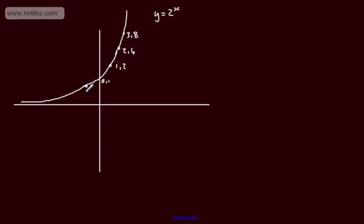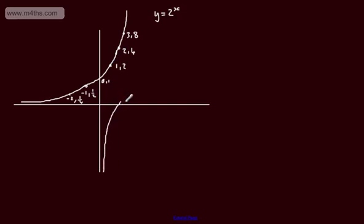If X equals minus 1, we get one-half. If X equals minus 2, we get one-quarter. This is the curve Y equals 2 to the X. I'm now going to draw the inverse function.